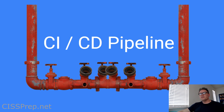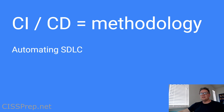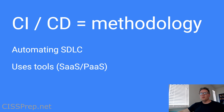CICD stands for continuous integration and continuous delivery. CICD is a methodology or a process — specifically, a process for automating the SDLC, or the software development lifecycle. It's typically done using tools like GitLab or Jenkins, which are made to enable the CICD process to be performed in an automated fashion.